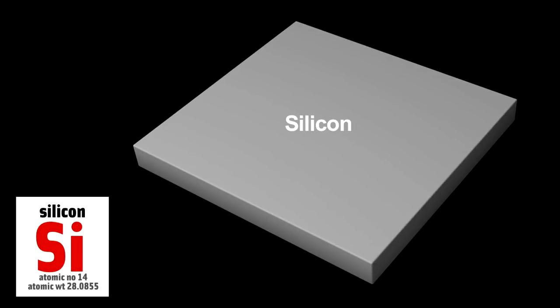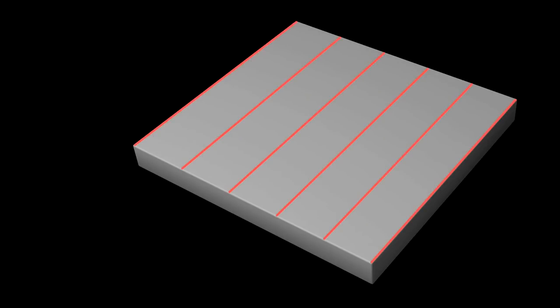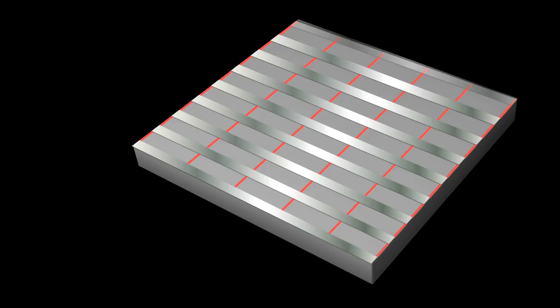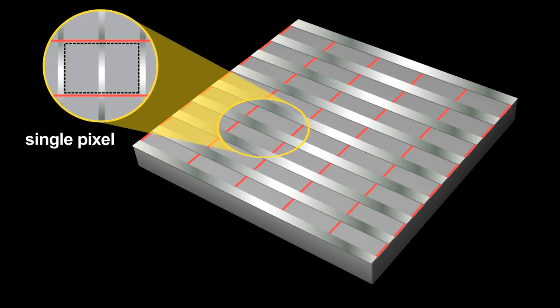A CCD is made from a slab of silicon. To make each pixel within the slab, engineers create insulating sections called channel stops. These divide the slab into rows. The surface is covered with a thin layer of insulating silicon dioxide, and then perpendicular to the channel stops, engineers deposit thin strips of metal, typically aluminum. Each pixel then is one section, bounded by channel stops and aluminum. So now we have our grid of pixels.